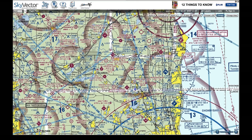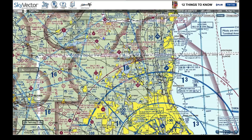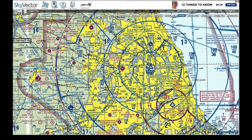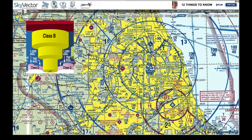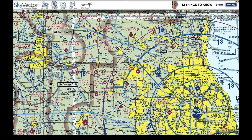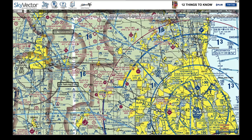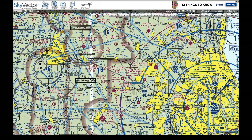In busy areas like Chicago, multiple airports can make it hard to find information. But if you find the airport symbol and look nearby, the chart tries to place all relevant information very close to the airport. If there are multiple airports and you're unsure which one you're looking at, you may need to zoom in, look up the airport, or check runway headings for more information.